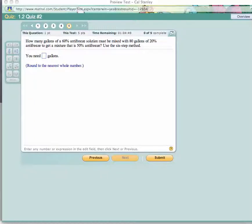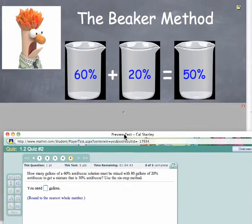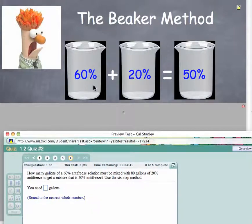This is a six step method, but I'll use a method I like to call the beaker method. In this case, we're going to have one beaker set up for 60% plus a second beaker with 20% equaling the third beaker. When we mix the two beakers into the third one, we get a 50% solution.